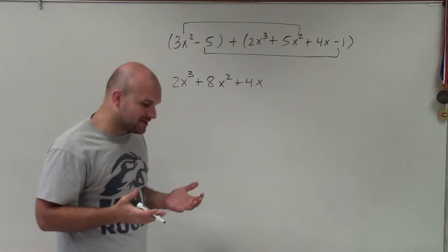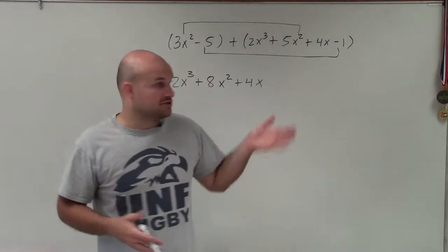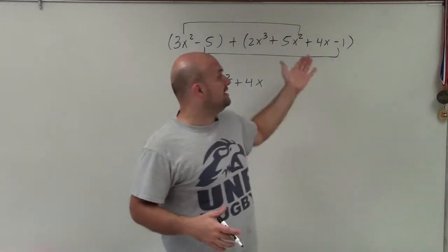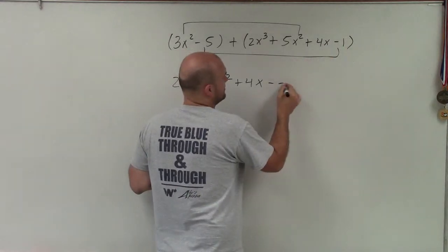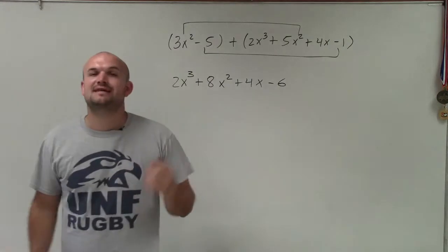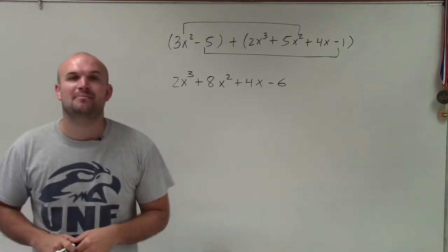And a lot of times when I'm thinking of negative numbers, I just think about owing money, right? So you owe $5, and now you owe $1. So therefore, now you owe $6. So there we go, ladies and gentlemen. That is how you combine two polynomials. Thanks.